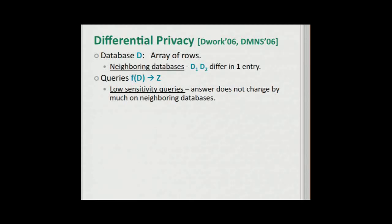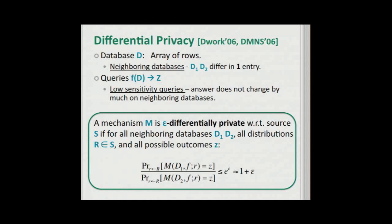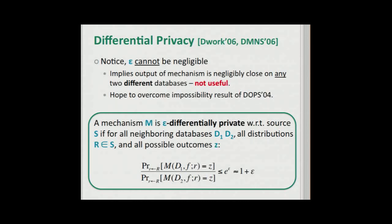Low-sensitivity queries are queries in which the answer doesn't change by much between neighboring databases. We say that a mechanism is epsilon differentially private with respect to a randomness source S if, for all neighboring databases and all randomness in the source, and all possible outcomes Z, the ratio of the probability that the mechanism on input D1 gives output Z over the probability it gives Z on D2 is at most e^epsilon. When epsilon is small, this is essentially just one plus epsilon. Notice that epsilon cannot be negligible — this would imply the output is negligibly close for any two different databases, which doesn't give us anything useful.